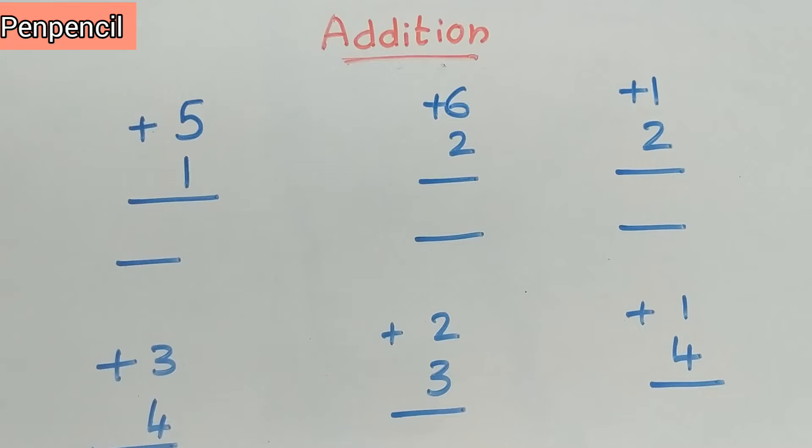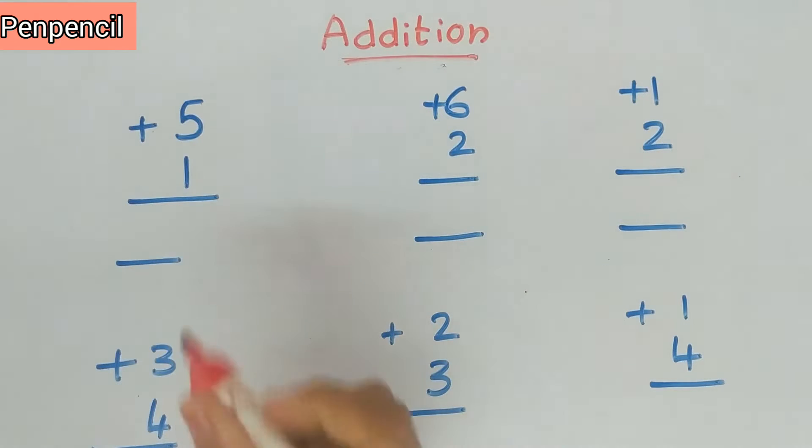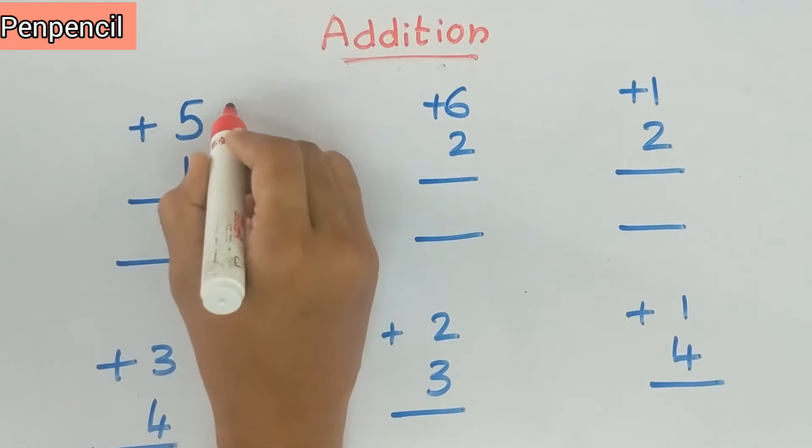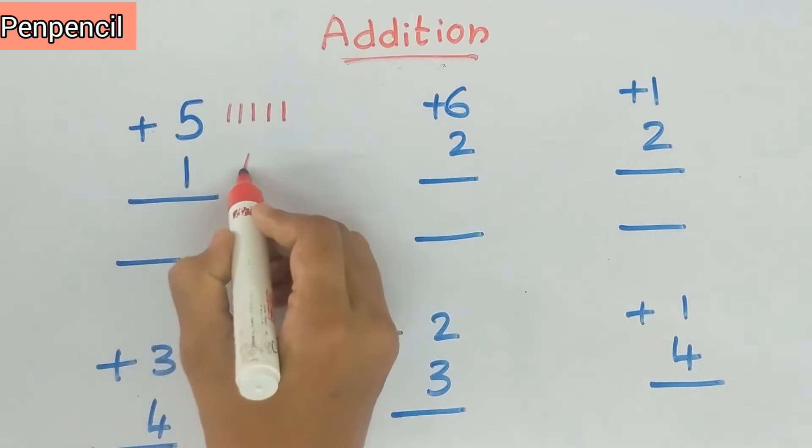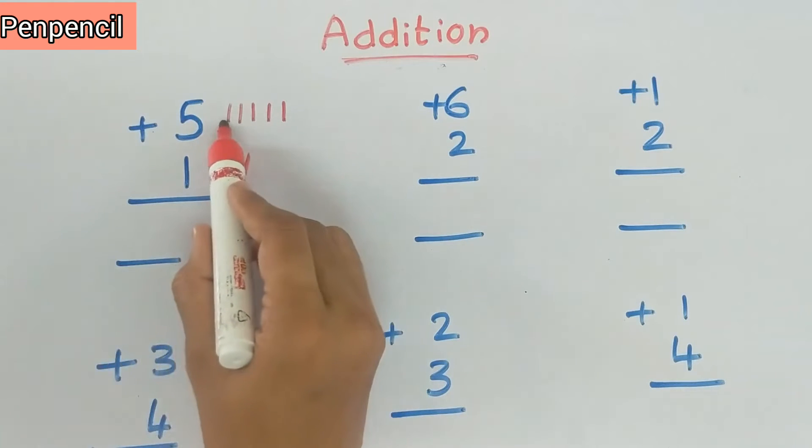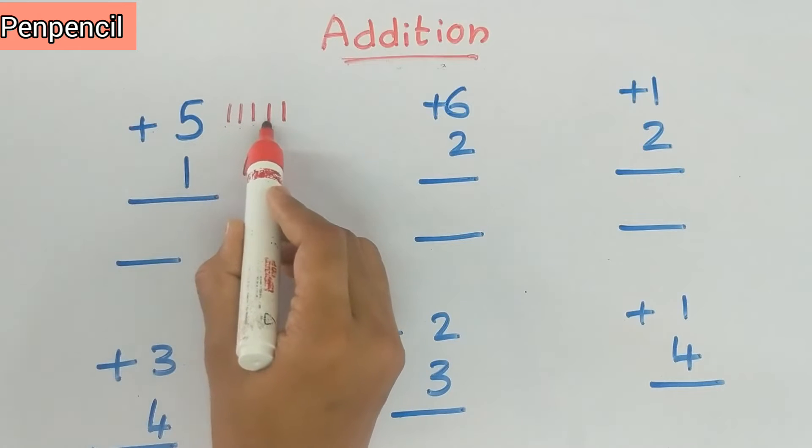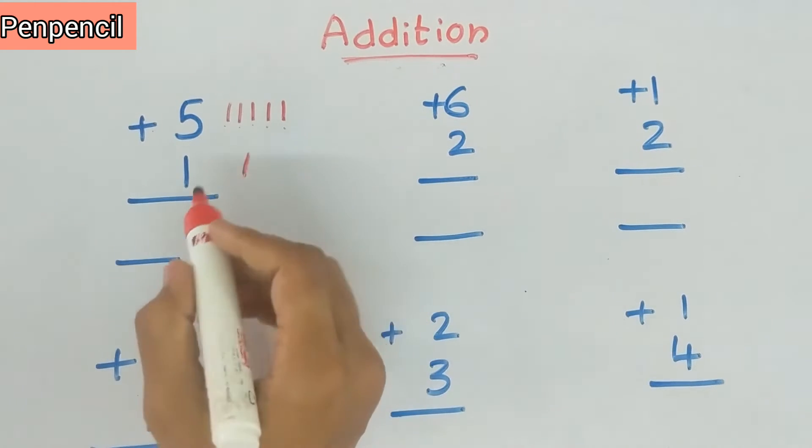What is addition? If you say 5 plus 1, we have to write 5 lines here: 1, 2, 3, 4, 5. Plus 1, so 1 we have to write. Now we have to count 1, 2, 3, 4, 5, 6. So the sum means 6. This way we have to write.